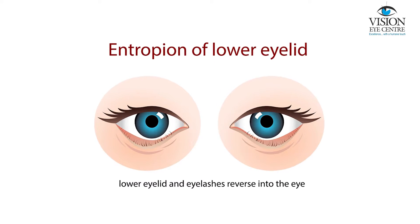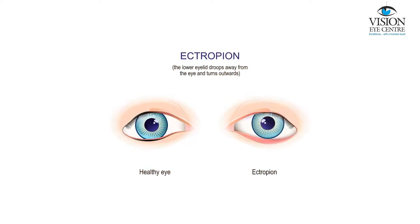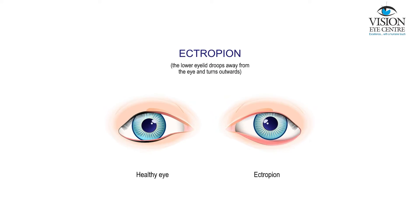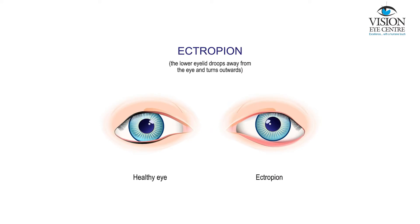...the inward turning of the eyelid. This can happen in the lower lid more commonly, but can also happen in the upper lid. Ectropion means outward turning of the eyelid, where the lashes are directed away from the eye.